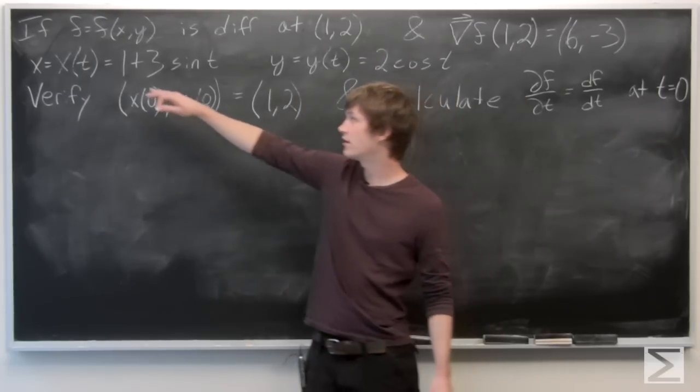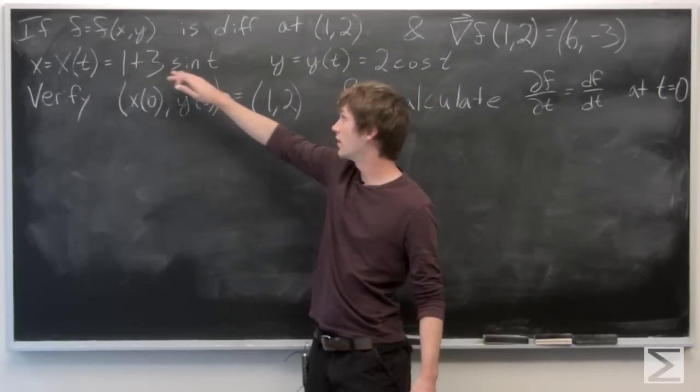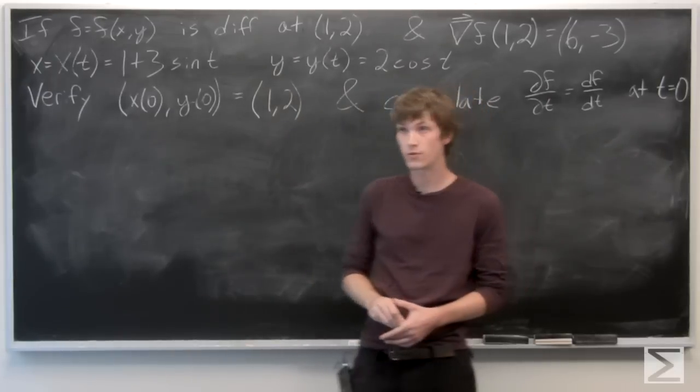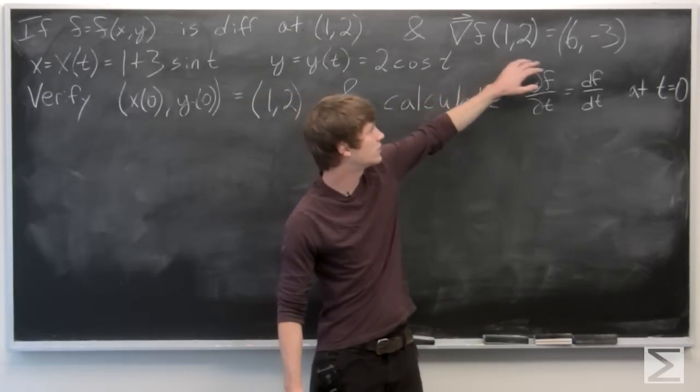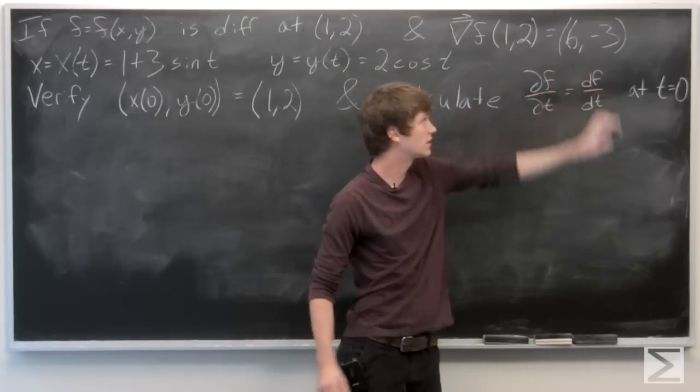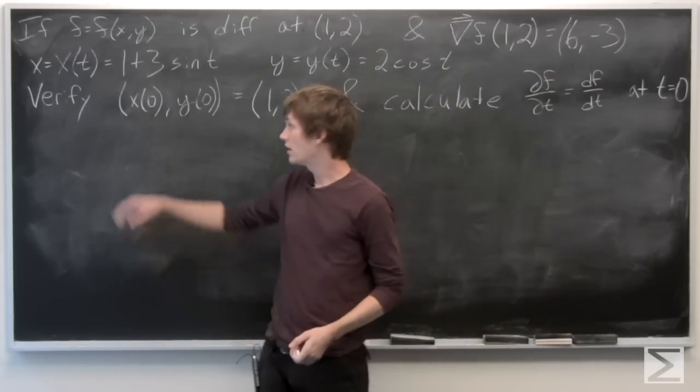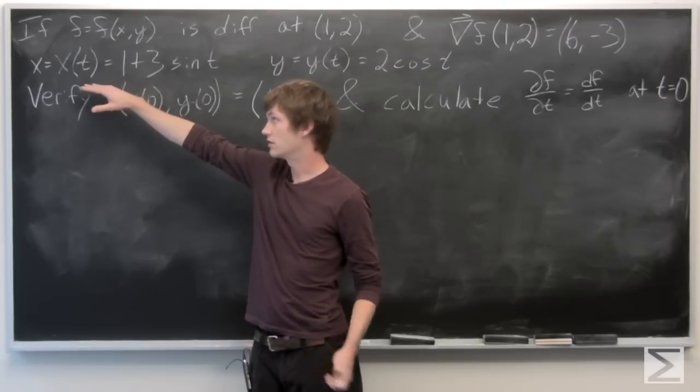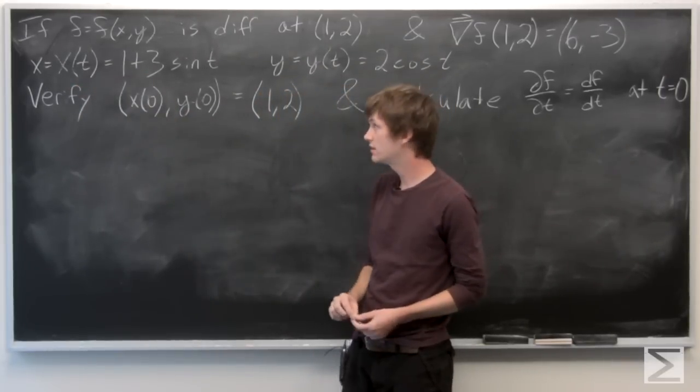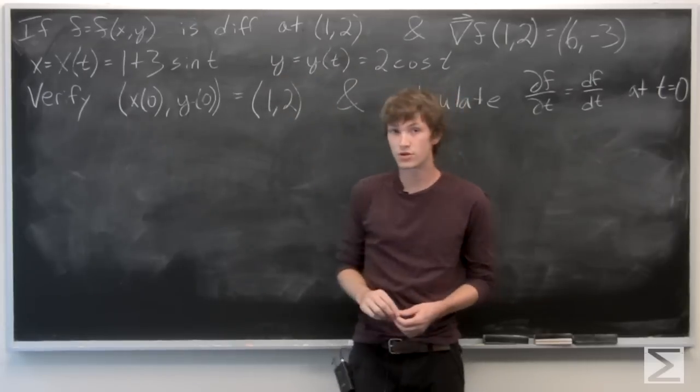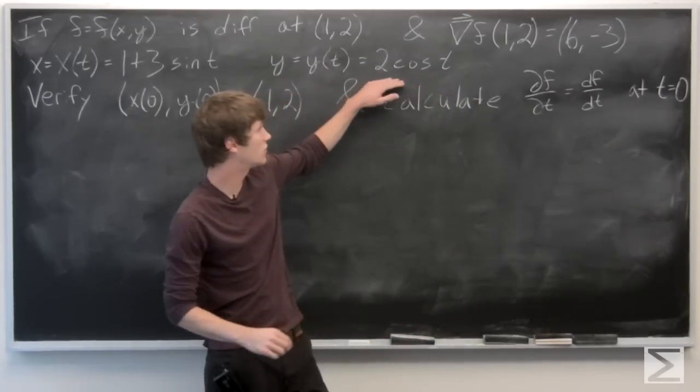In this problem, we're told that if f equals f of x, y is differentiable at the point (1, 2), and the gradient vector of f at (1, 2) is equal to the vector (6, -3), and x is a function of t equals 1 plus 3 sine t, and y is a function of t equals 2 cosine t.